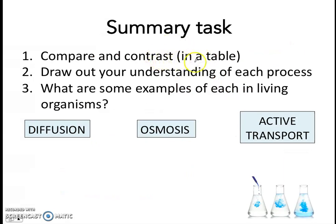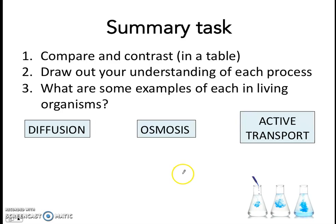Now, having gone through all three processes, I want you to do a summary task before our next lesson. Compare and contrast in a table these three processes: diffusion, osmosis, and active transport. Draw a little diagram to show your understanding of each process, and state examples of each process in living organisms — one example from plants and one from animals. I look forward to seeing your summary table in class. See you.